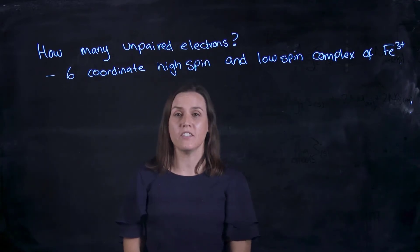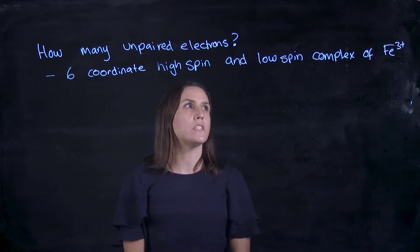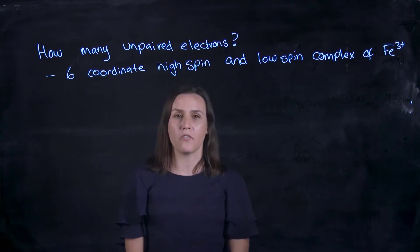Hi, welcome to this video today, another video on transition metals. The question we're going to try and answer today is how many unpaired electrons? So the situation we have is a 6-coordinate high spin and low spin complex of Fe3+.